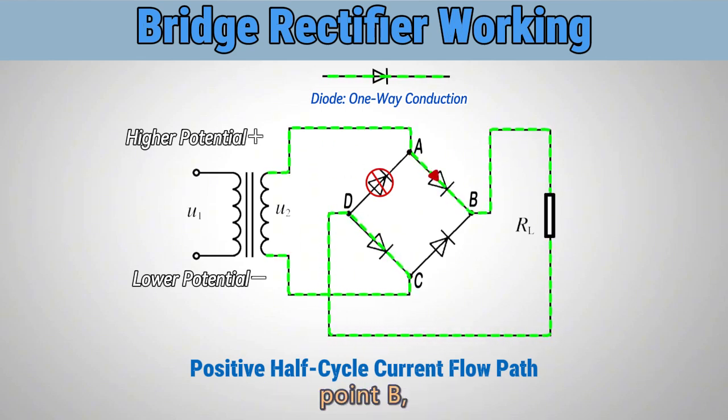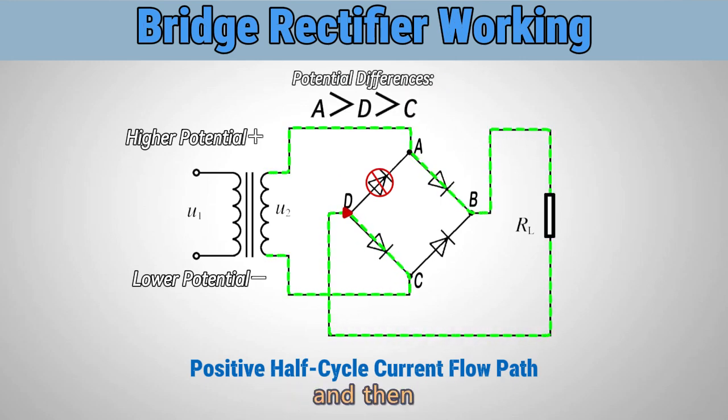Once the current reaches point B, it can only pass through the load and flow to point D. At point D, both paths to point A and point C are conductive, but since point A has a higher potential than point D, the current can only flow from D to C and then back to the power source, completing the circuit.